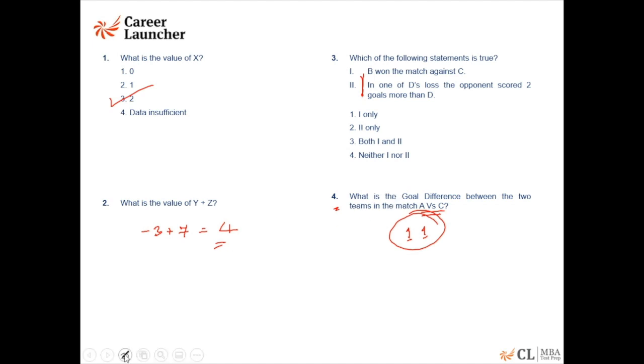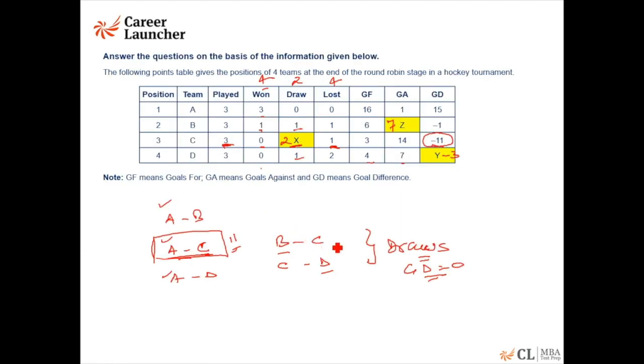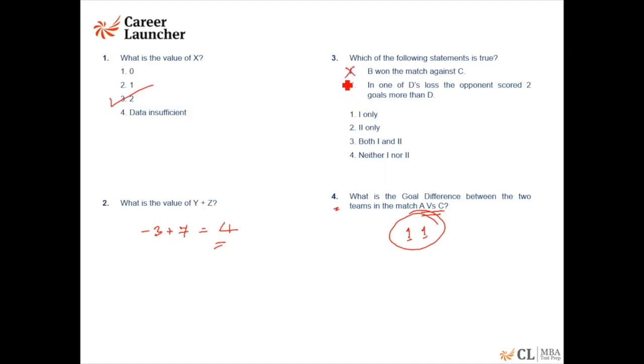Which of the following statements is true? B won the match against C. Now we just found out that B has drawn the match against C. So statement 1 is definitely incorrect. If statement 1 is incorrect, that means this cannot be the answer, this cannot be the answer, and it will be this or this.